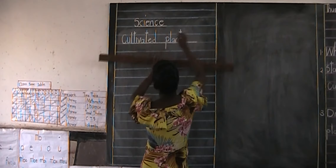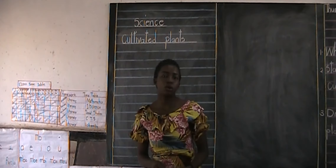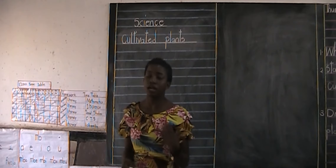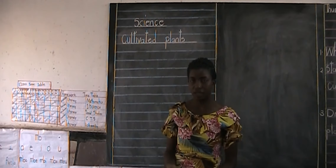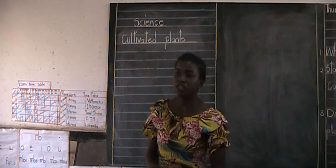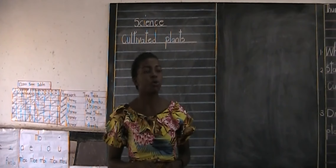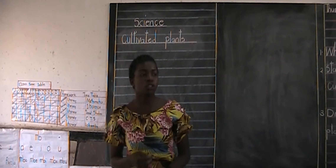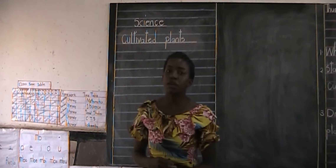So now, since we looked at what we are going to be learning today, we are saying cultivated plants. Before we can give examples of plants that are cultivated, we need to know what the word cultivation means. What is to cultivate? Cultivation is the process of preparing the soil in order for us to grow different types of crops.